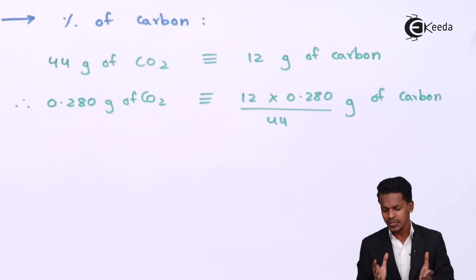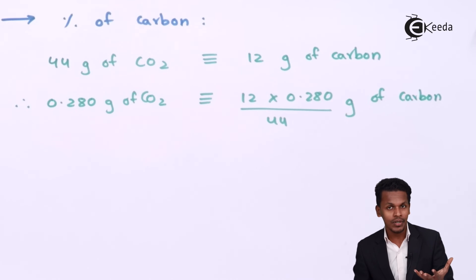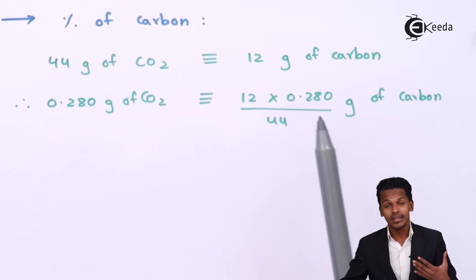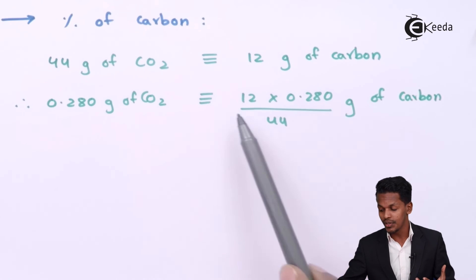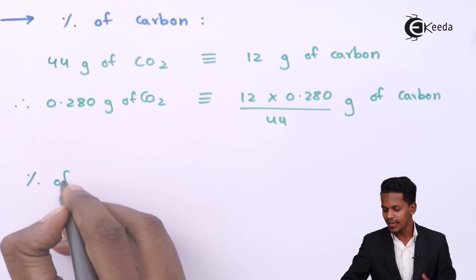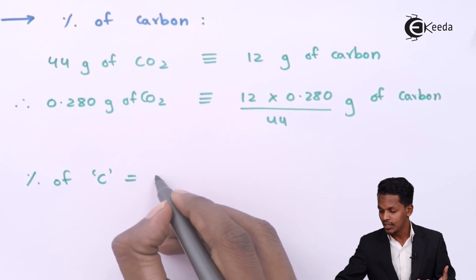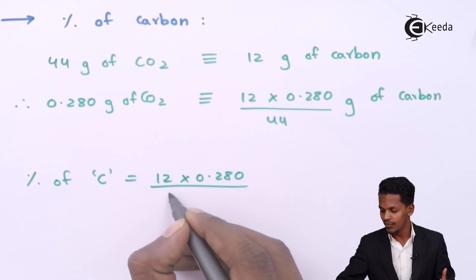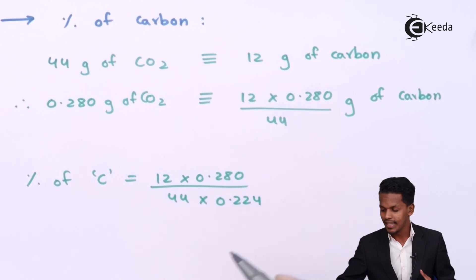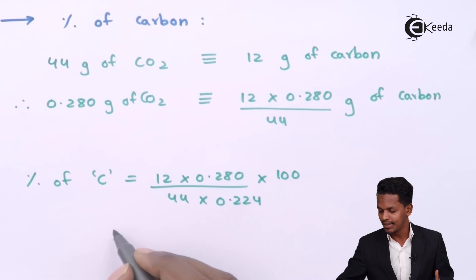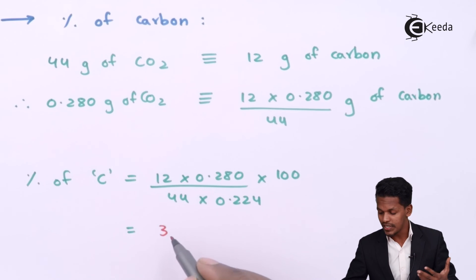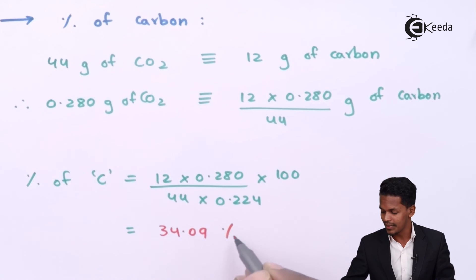We also have to determine the percentage of carbon in the organic compound. Since we have 0.224 gram of organic compound, it contains 12 × 0.280 / 44 gram of carbon. The percentage of carbon is therefore (12 × 0.280 / 44) / 0.224 × 100, which gives us 34.09% carbon.